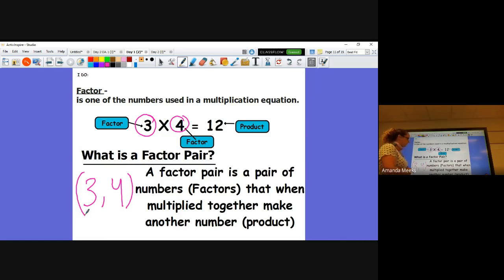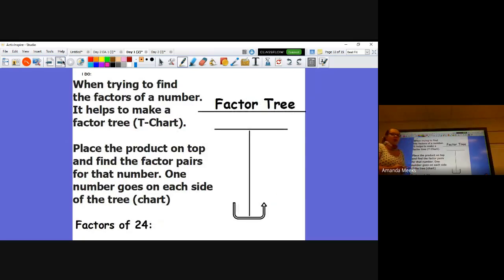When we are trying to find our factors, one strategy we like to use in fourth grade is called a factor tree. A factor tree is just simply a T-chart. There's no fancy leaves or anything on it.